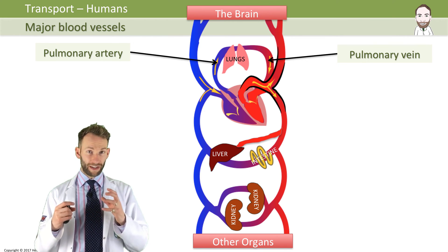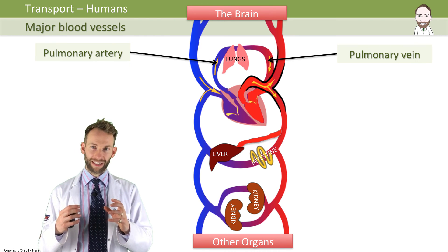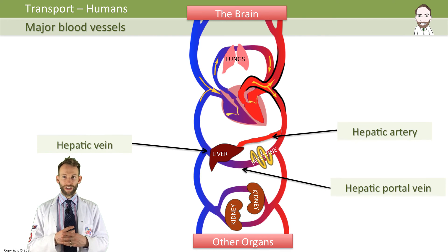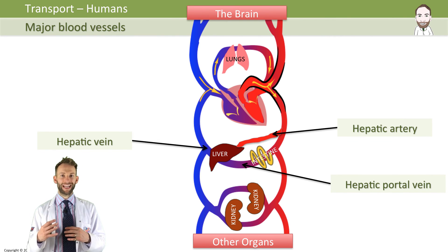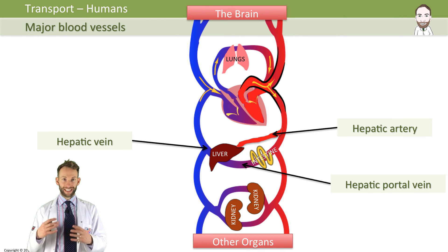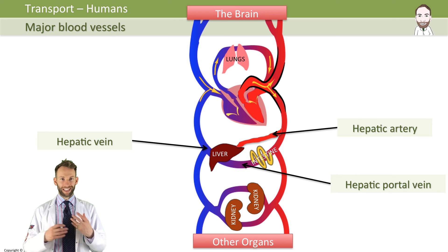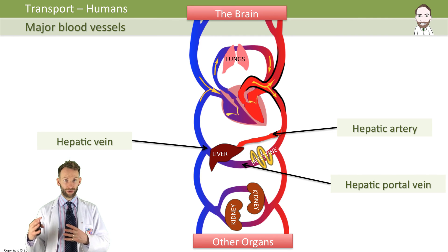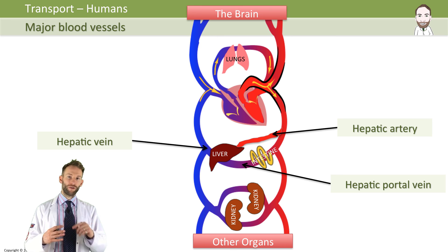The liver is a strange organ because it actually has three blood vessels associated with it — two blood supplies. You have the hepatic artery, which carries oxygenated blood from the heart straight into the liver. But also, when you eat food, the first place it goes after digestion is to the liver to deal with any toxins. So there's also a blood supply coming from the intestine into the liver, called the hepatic portal vein. Then there is the hepatic vein, which carries deoxygenated blood out of the liver.